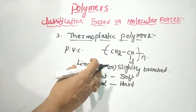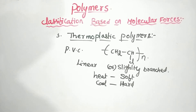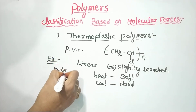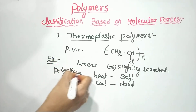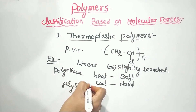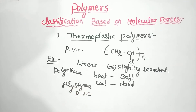Thermoplastic polymers are soft when heated and hard when cooled. They have intermolecular forces of attraction. When heated they become soft; when cooled they become hard. Examples include polythene, polystyrene, and polyvinyl chloride (PVC).